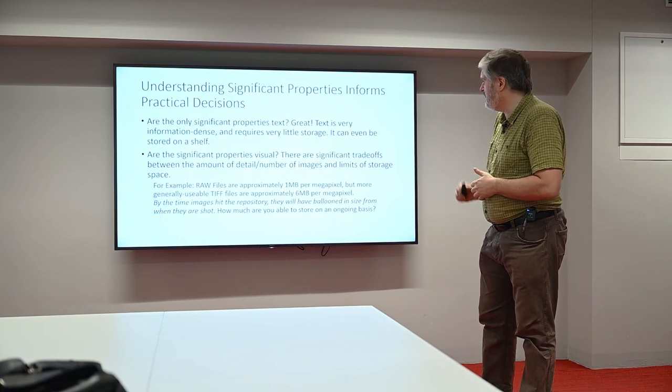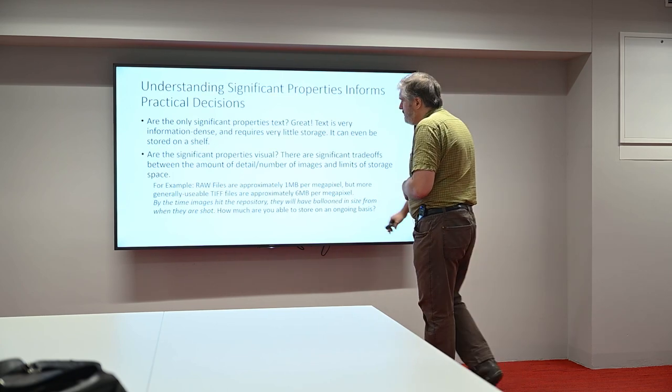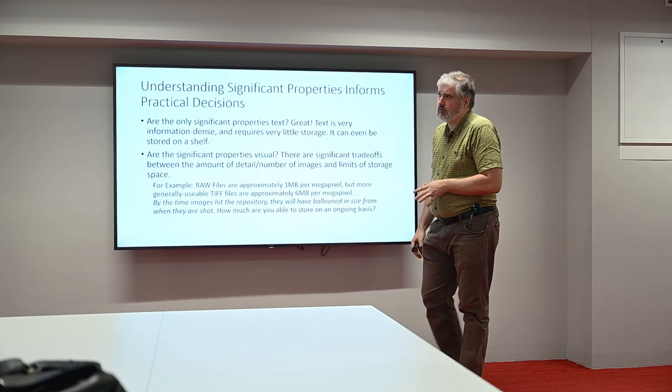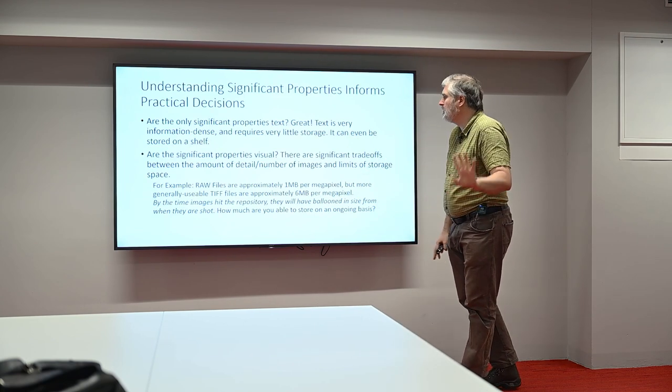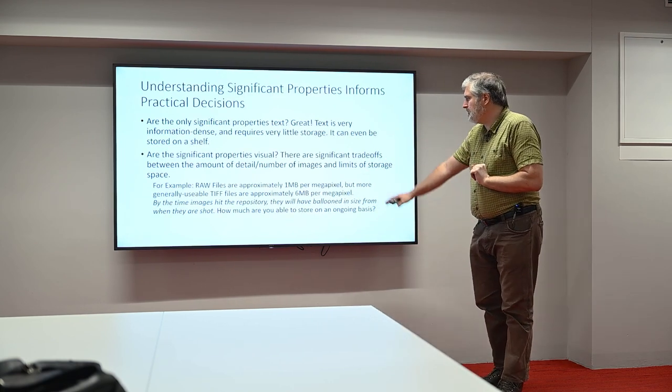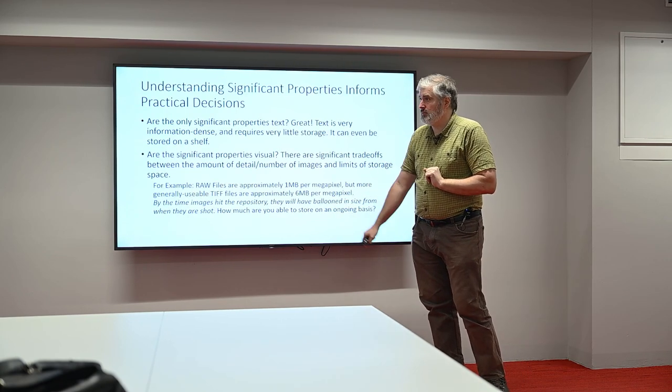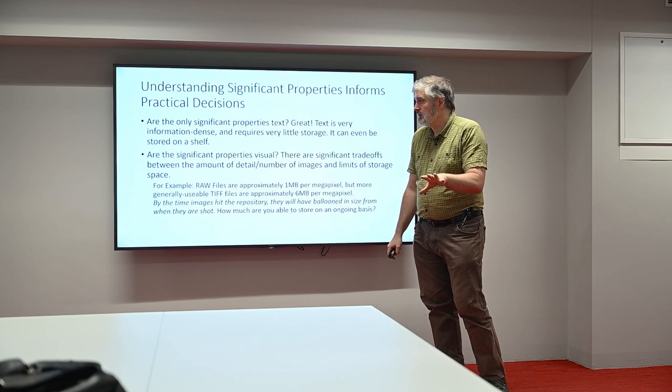So we've covered some of this. Following up on what Pia said, a raw file is approximately one megabyte per megapixel. Rule of thumb, it varies. A TIFF file, which is one of the more common formats we actually store in, is six times that size, starting.